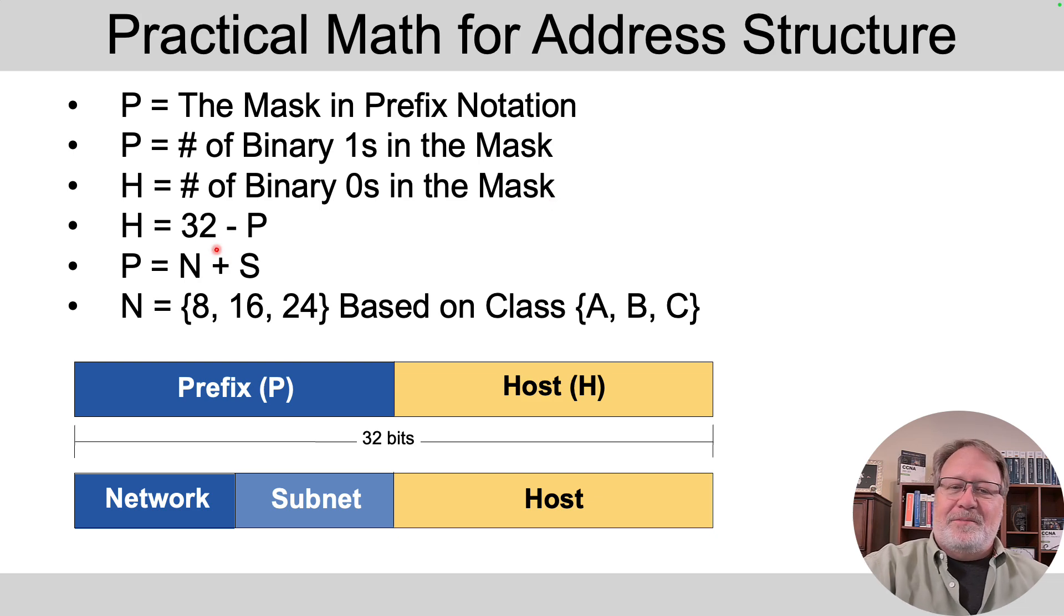And you can calculate that based on this little equation: H equals 32 minus P, if P is the prefix length. For instance, if this is 24 over here, we've got eight host bits. If it's 16, we've got 16 host bits, and so on.